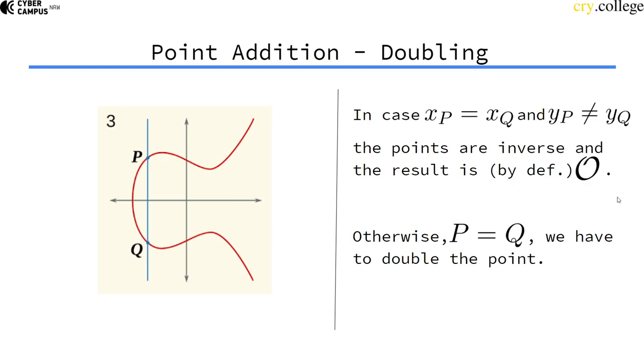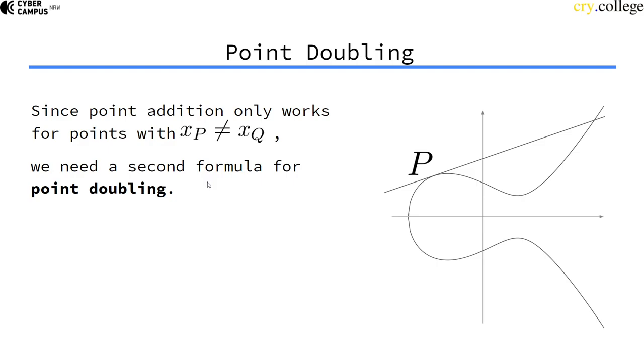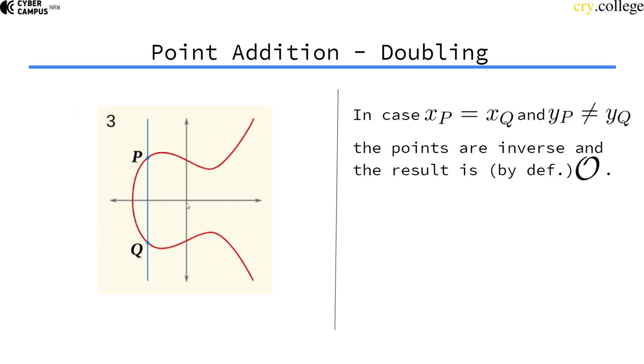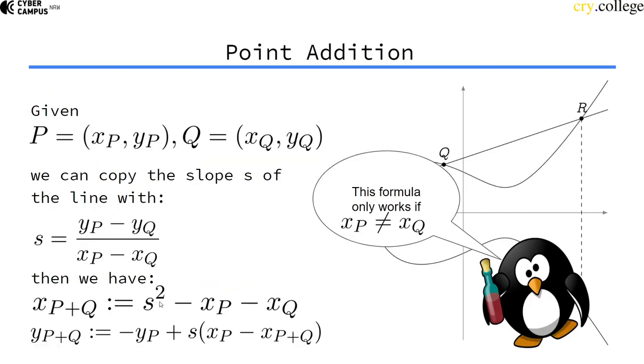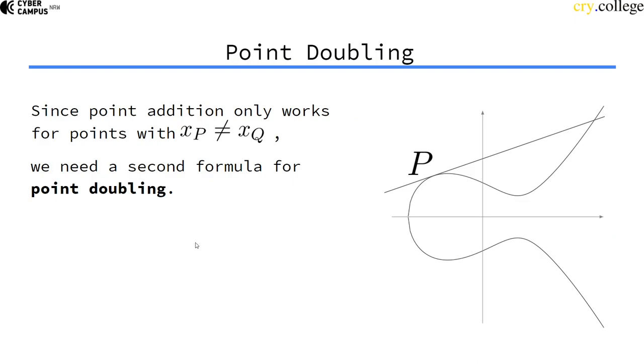Otherwise, if the y values of p and q are also the same, then it's actually the same point, p and q. Then we actually have to double the point. Instead of adding the same point to each other, we have to double it. So we need a second formula for point doubling. This here was point addition. Now we need point doubling.